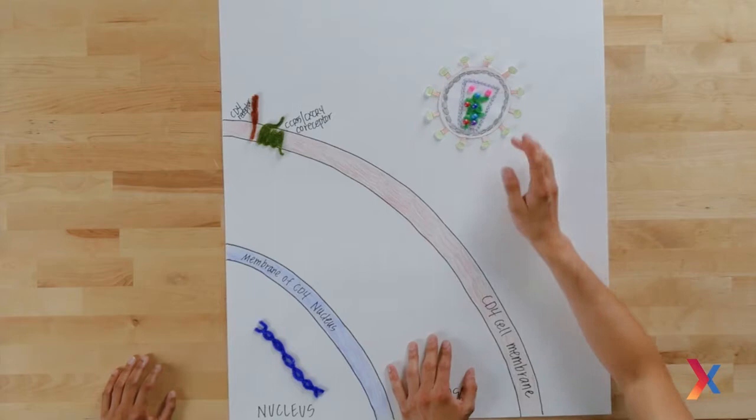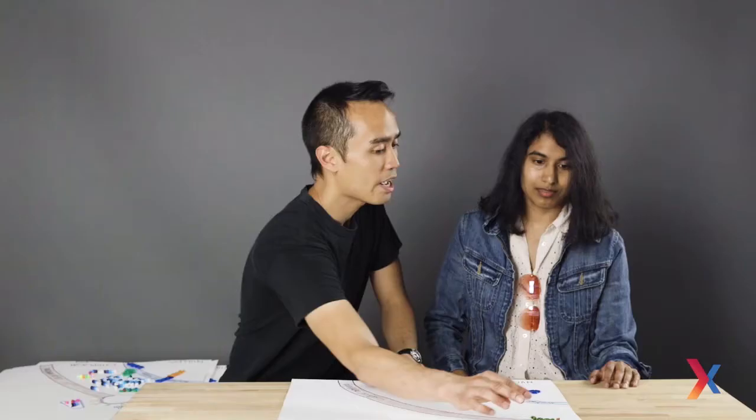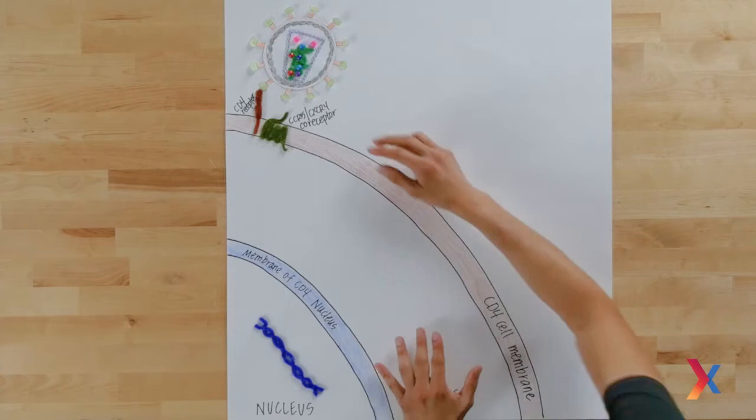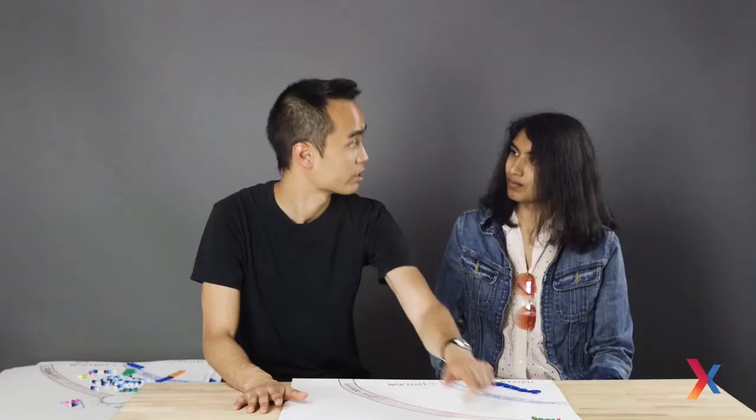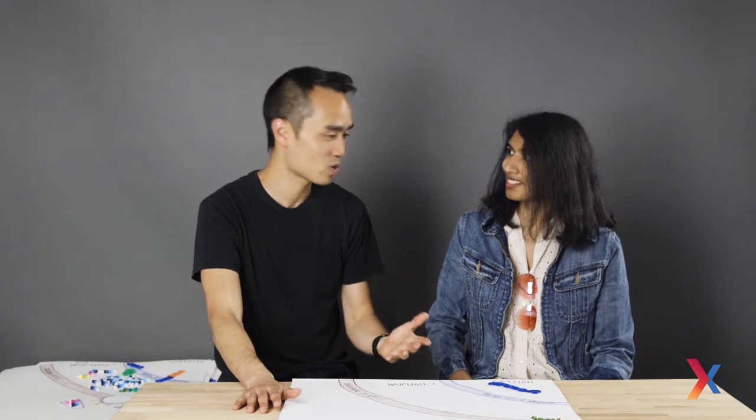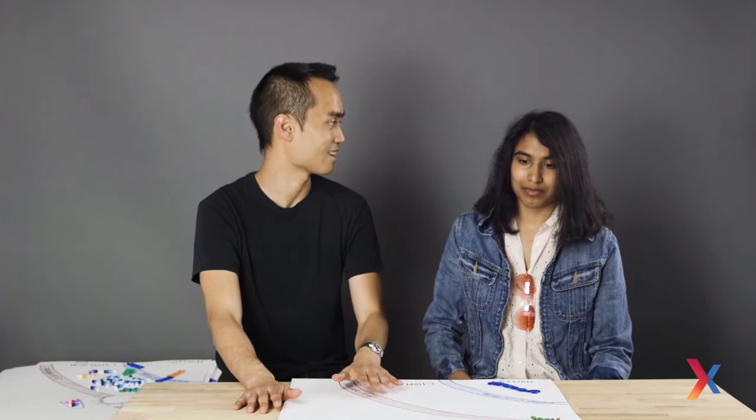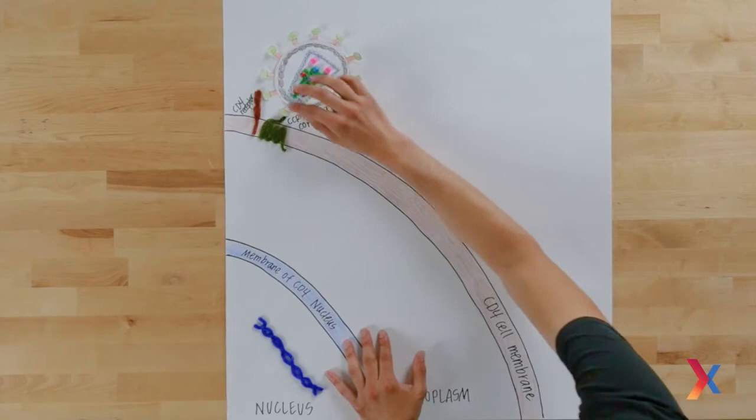HIV basically recognizes the CD4 receptor using the protein GP120. What that allows it to do is undergo a conformational change that then allows the HIV to interact with a second receptor on the surface known as a co-receptor. There are two varieties depending on the CD4 cell type: CCR5 and CXCR4. Both help CD4 cells recognize chemical signals that tell where the pathogens are inside the environment.